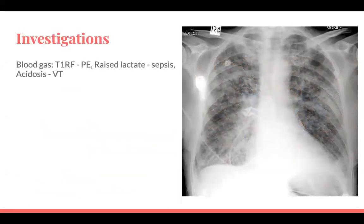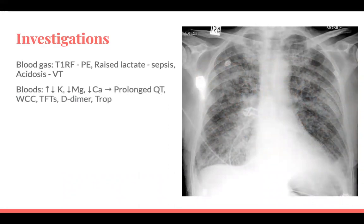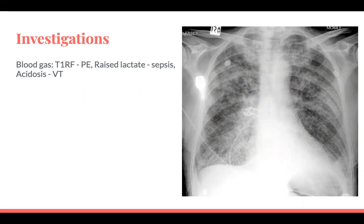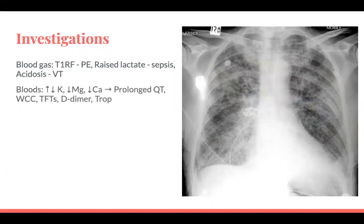For investigations — blood gases: if someone's hypoxic with type one respiratory failure, a PE might be causing tachycardia. A raised lactate suggests sepsis potentially driving AF. If someone is acidotic — lactic, respiratory, or metabolic — this can increase the risk of ventricular tachycardia. When doing bloods, look for electrolyte abnormalities: high or low potassium, low magnesium, and low calcium are known to cause prolonged QT, which can lead to tachycardia.